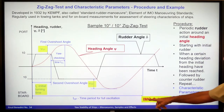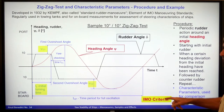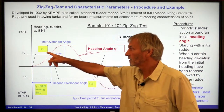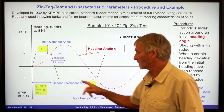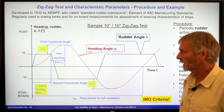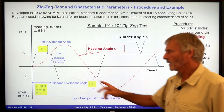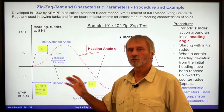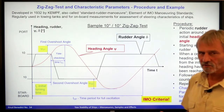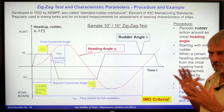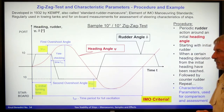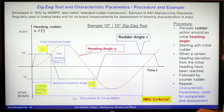The IMO criteria for maneuvering standards are related to the first and the second overswing angle, and also to the initial turning time — but expressed as the distance the ship is covering. I will explain this later.